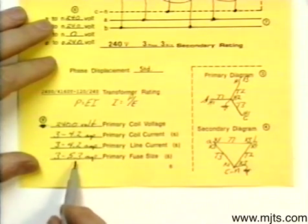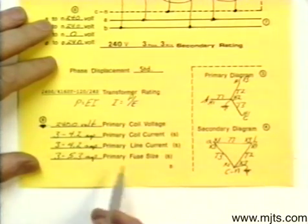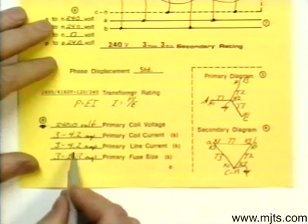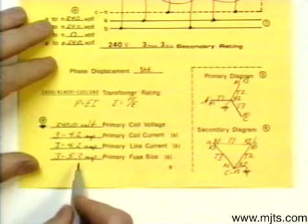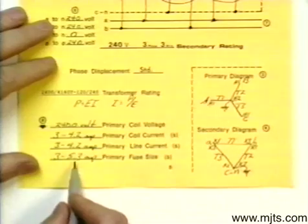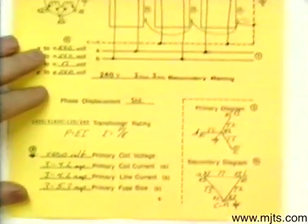And we've got our transformer problem done. As far as fuses, you'd go to the closest size fuse you've got. In this case, you'd probably use a 5 amp fuse. But for your problems here, go to the nearest tenth until you get above ten. And when you get into double numbers, then just round it off to the nearest whole number. Then we'll go on to the next problem.